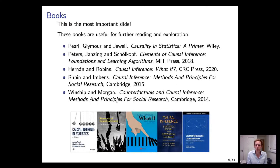Of all the slides in this talk, this is the most important one — a list of books to look at after this talk. Pearl's Primer is a very good basic introduction for someone who understands probability. The book by Peters, Janssing, and Schölkopf on Elements of Causal Inference is really good if you're interested in the machine learning aspects. The other three books are also very good. The slides will be made available after the talk.